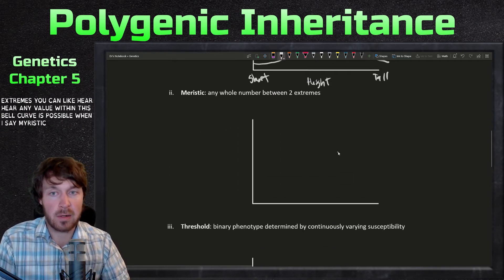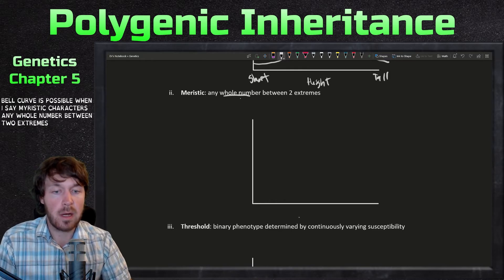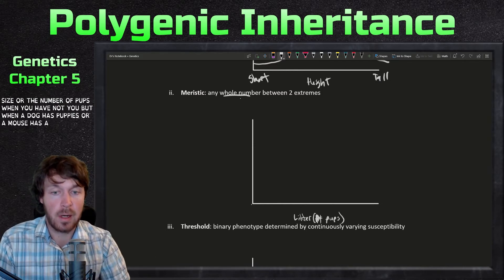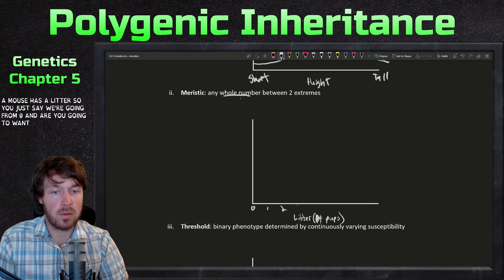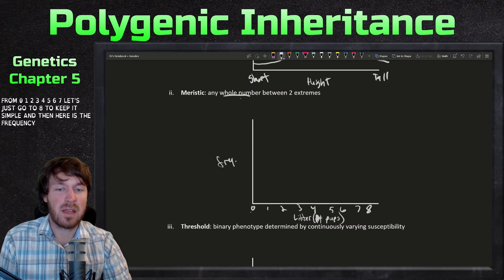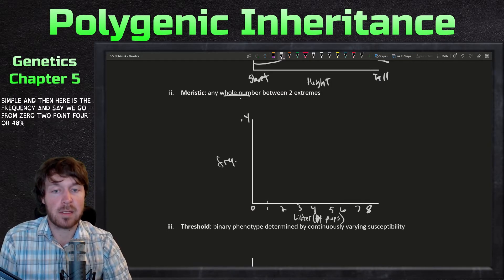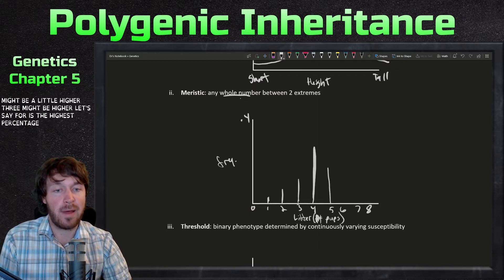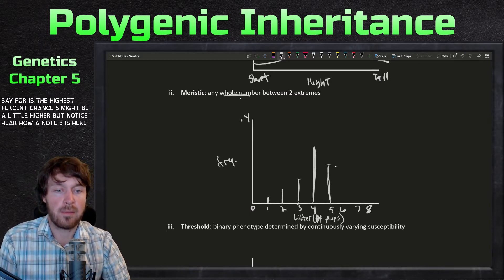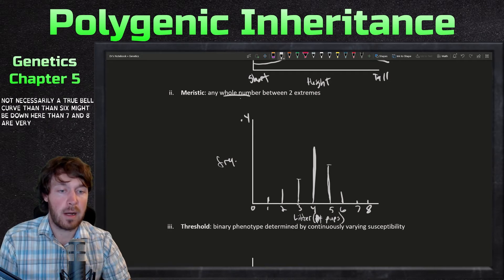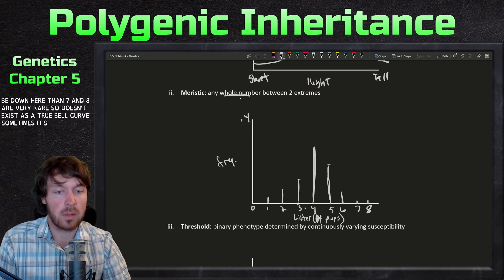A meristic character is any whole number between two extremes. A good example is litter size, or the number of pups — when a dog has puppies or a mouse has a litter. So let's say we're going from zero to eight to keep it simple, with frequency on the y-axis going from zero to 0.4. A lower chance of having one, two might be a little higher, three higher still, four might be the highest, five a little higher, then six lower, and seven and eight very rare. So it doesn't exist as a true bell curve — sometimes it's close, but it's any whole number.